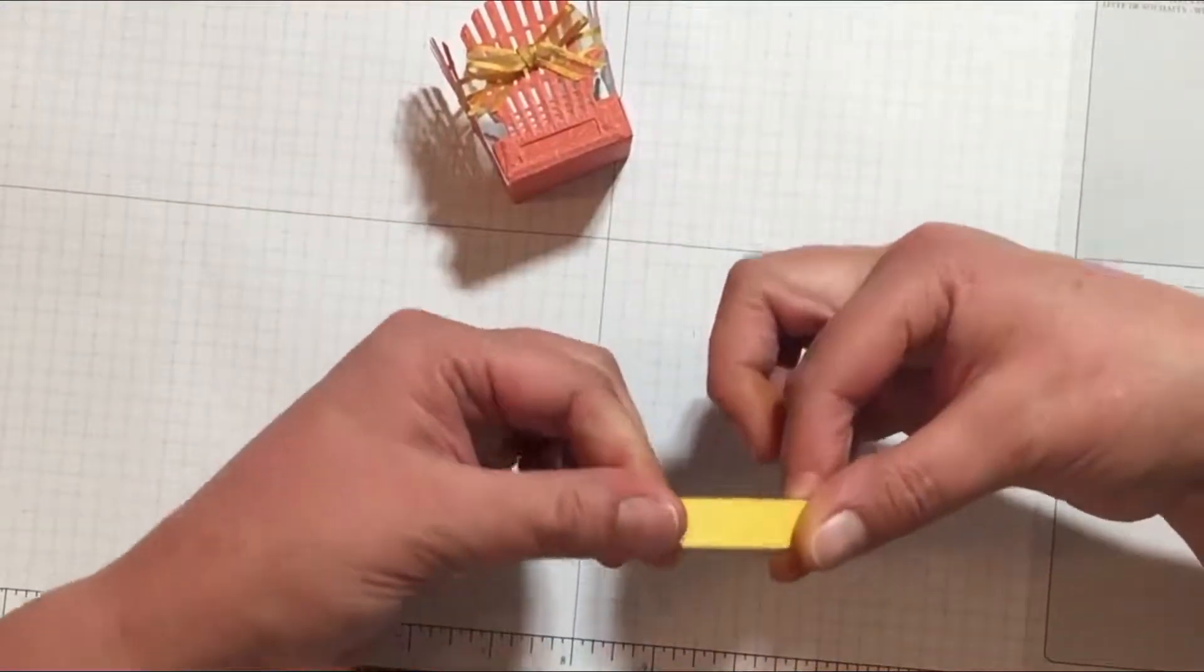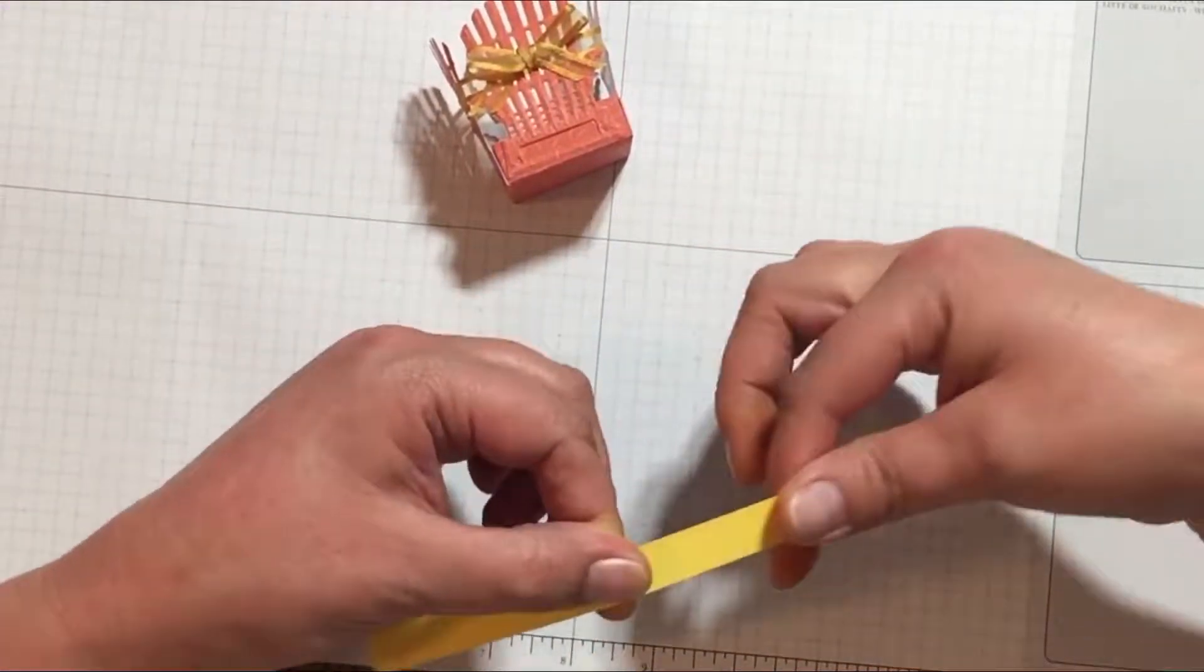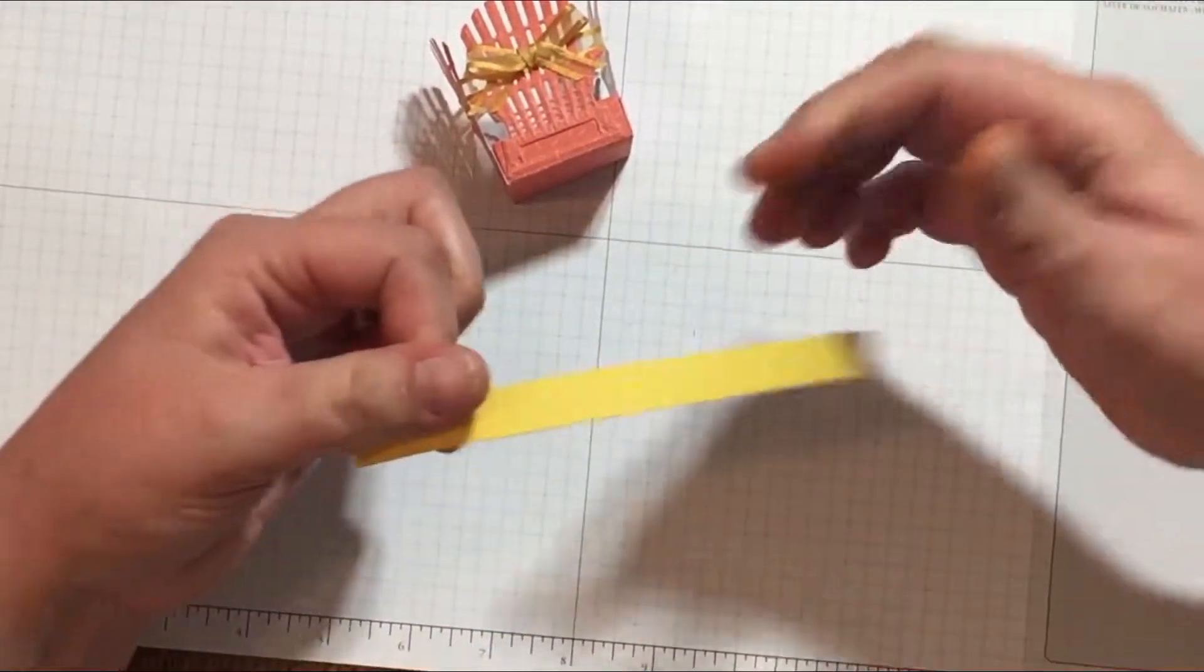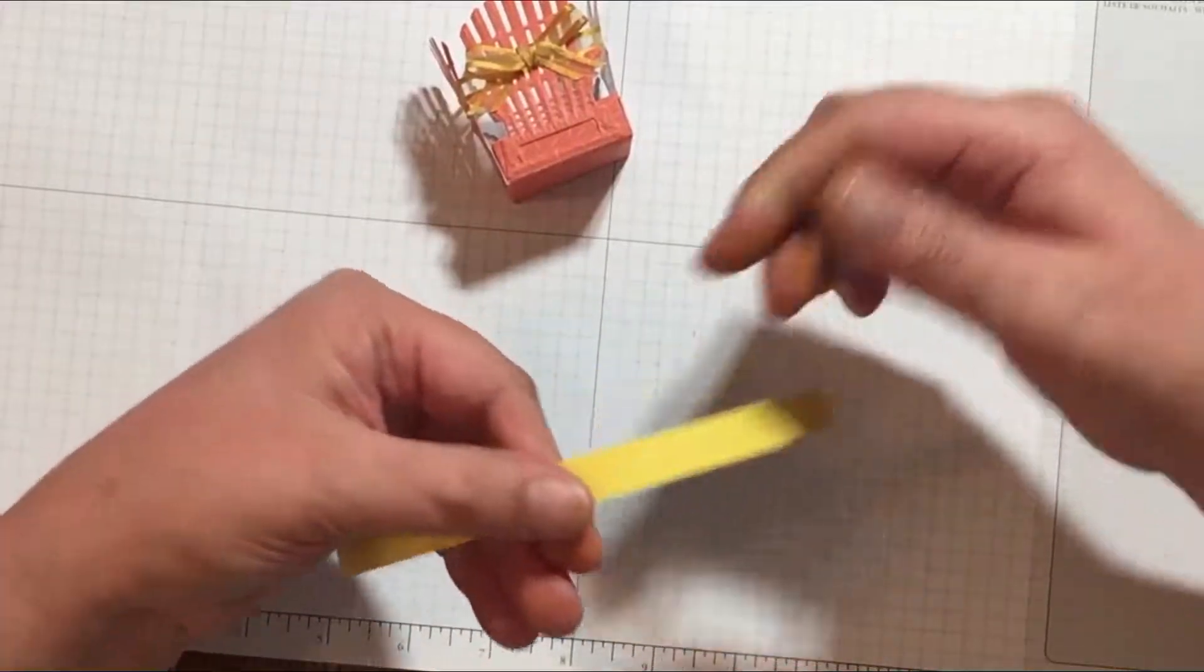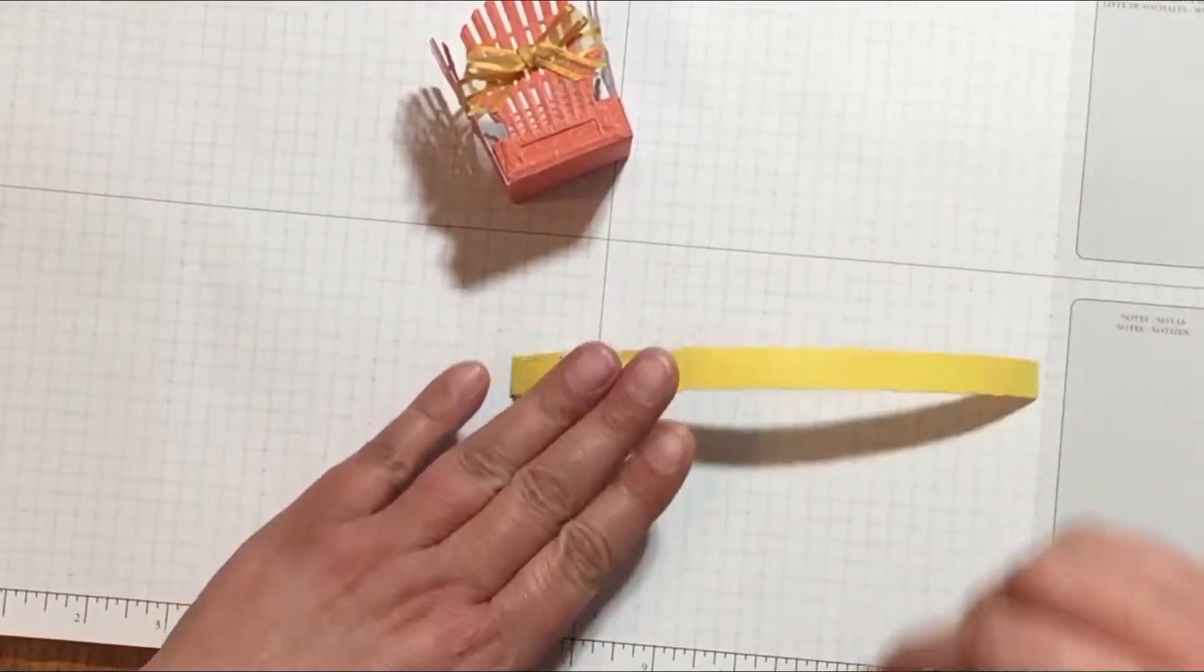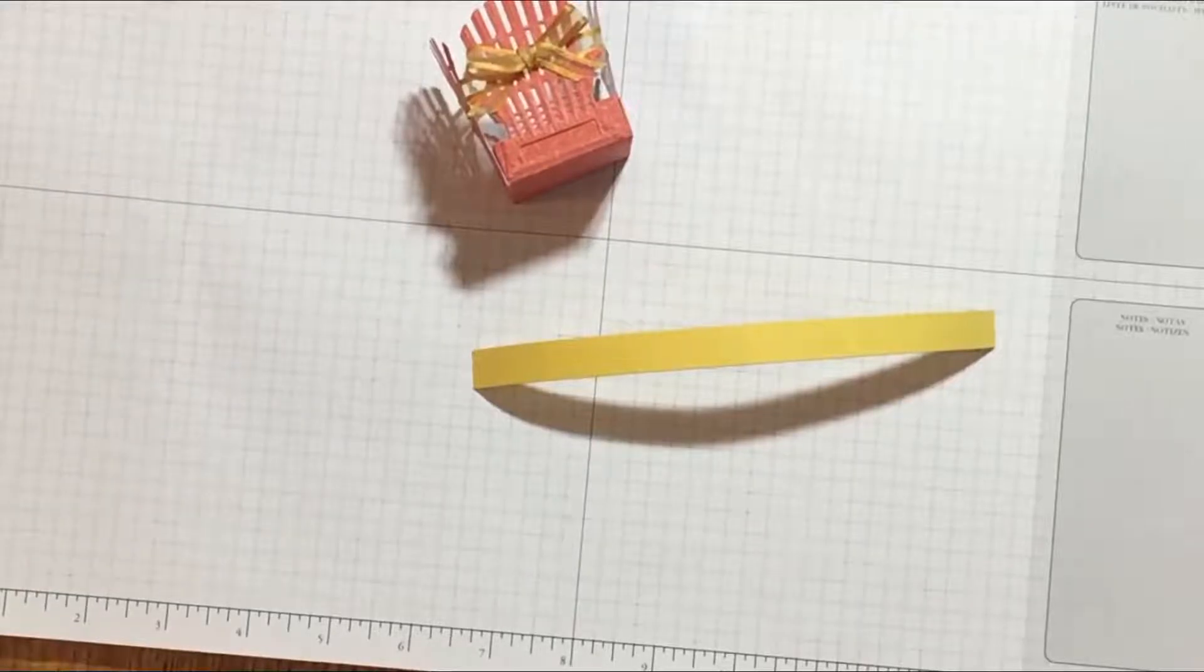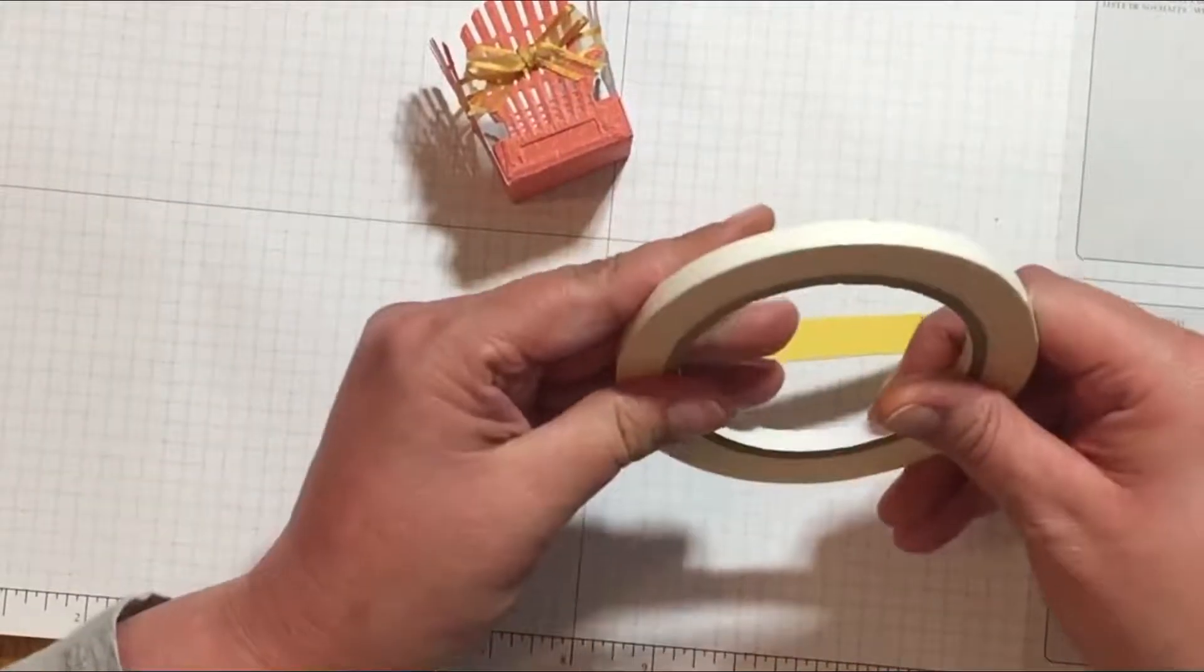Now the last thing you need to do to finish your Easter basket is attach the handle. I find that in order to keep the handle from creasing when I'm attaching it, it helps if I just sort of run my fingers along the inside until I get a little bit of a curve going on it.